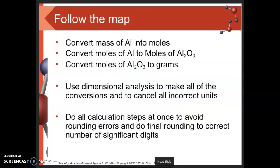My process is relatively simple. First, convert the mass of aluminum into moles using the molar mass of aluminum. Second, take the moles of aluminum and convert to moles of aluminum oxide using a balanced chemical equation. Finally, convert the moles of aluminum oxide into grams using the molar mass.